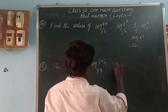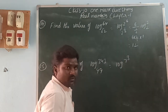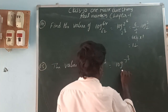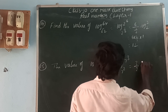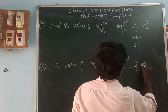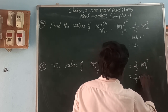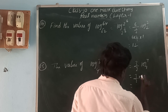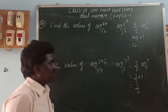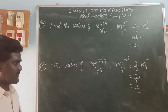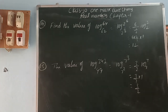Log 343 base 49 — write 343 as 7³ and 49 as 7². So this is log(7³) base 7² = 3/2 · log 7 base 7 = 3/2 × 1 = 3/2. The value of log 343 base 49 is 3/2.